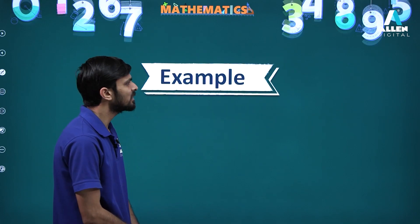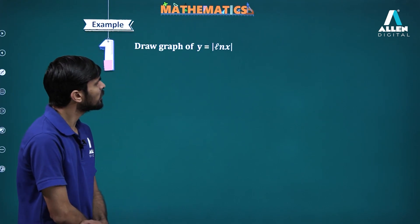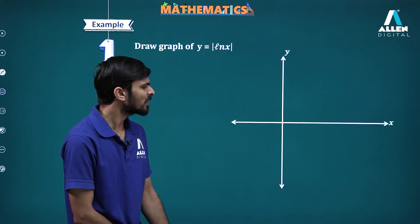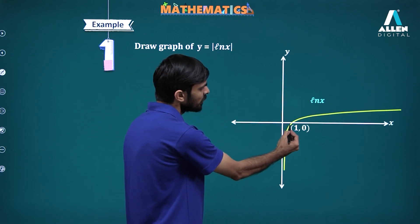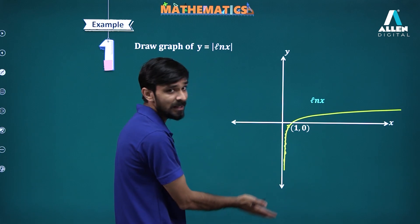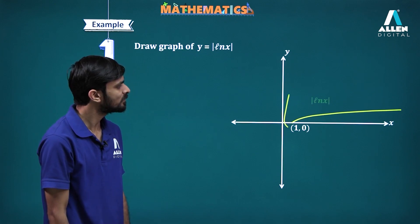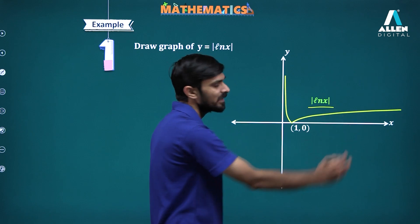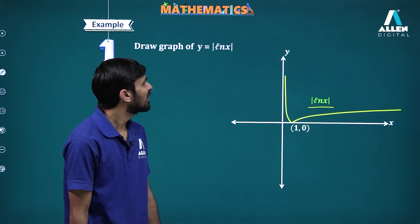Let's take some examples. We need to draw the graph of mod of ln x. We know ln x looks like this. All we need to do is remove the portion below the x-axis and take the reflection of that part in the x-axis. That will be your graph of mod of ln x.